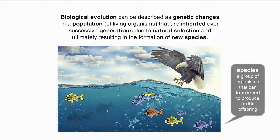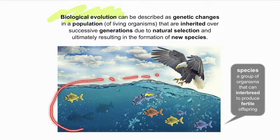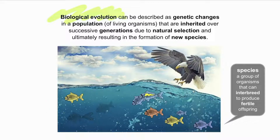Biological evolution may result in the formation of new species — this is known as speciation. A species is a man-made definition referring to a group of organisms with the ability to interbreed and produce fertile or viable offspring. The theory of evolution proposes an explanation of how one species gives rise to new species over long periods of time.